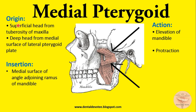Moving on to the medial pterygoid. Its origin is from the tuberosity of the maxilla — the superficial head originates from the maxillary tuberosity, and the deep head originates from the medial surface of the lateral pterygoid plate. It is inserted into the medial surface of the ramus of the mandible. Its action is elevation and also protraction of the mandible.